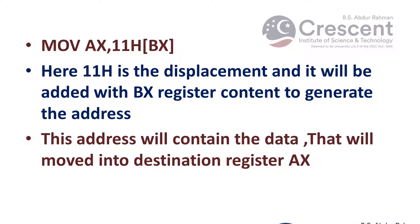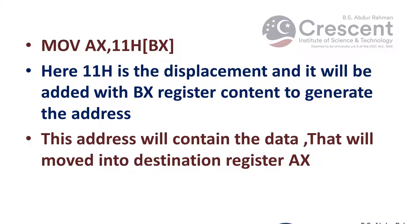The next type is based relative addressing mode. An example is MOV AX, [BX+11H], where 11H represents the displacement. It is added with the value of BX register to form the address. This particular address contains the data, and that data is moved into AX register.